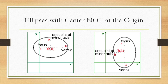Here we have two ellipses with the center not at the origin. The ellipse on the left has the major axis being parallel to the x-axis, and the ellipse on the right has the major axis being parallel to the y-axis. The ellipse on the left has foci represented by (h ± c, k), vertices represented by (h ± a, k), and the center at (h, k). The ellipse on the right has foci represented by (h, k ± c), vertices represented by (h, k ± a), and the center at (h, k).